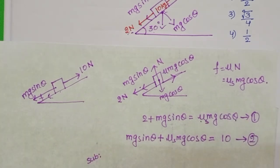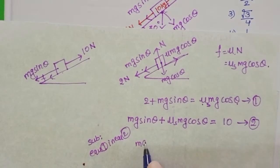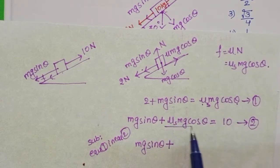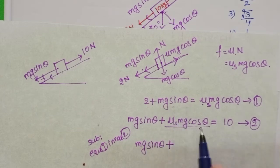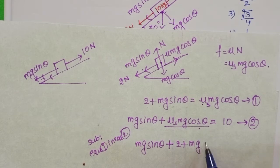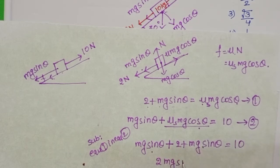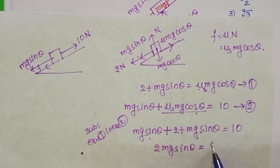Now substitute Equation 1 into Equation 2. From Equation 2: mg sinθ + (μs mg cosθ) = 10. In place of μs mg cosθ, substitute 2 + mg sinθ from Equation 1. This gives: mg sinθ + 2 + mg sinθ = 10, so 2mg sinθ = 10 − 2 = 8.